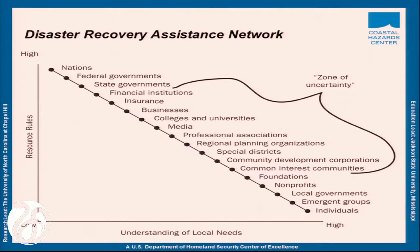Within the middle — what I would call a zone of uncertainty — are groups and organizations that we know less about. We tend to over-study the federal government and sometimes focus on individuals and nonprofits. But we often don't talk about the media's role in spreading misinformation following disaster, or special districts and community development organizations that often reach out to assist the most needy. A fundamental challenge is how do we change the makeup of this system — and I'll show how planning can modify it.